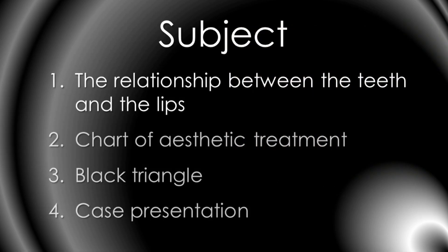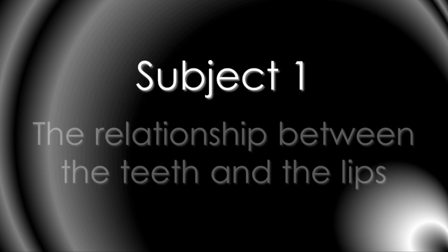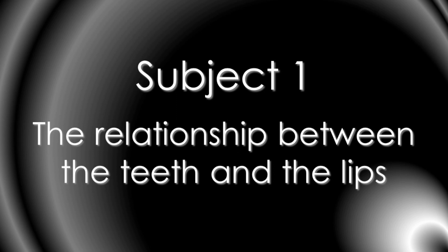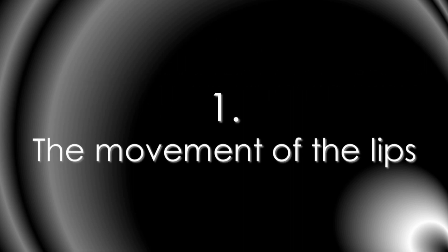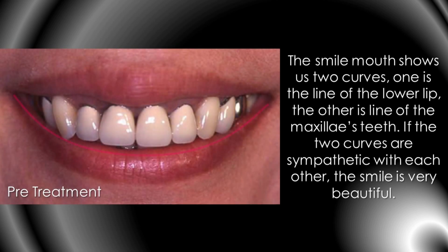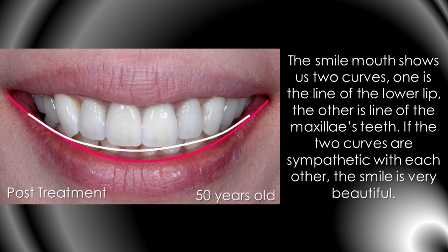Today's subject number one: the relationship between the teeth and the lips. The movement of the lips. The smile mouth shows us two curves — one is the line of the lower lip, and the other is the line of the maxillary teeth. If the two curves are sympathetic with each other, the smile is very, very beautiful. This is my treatment.